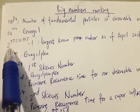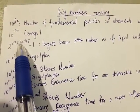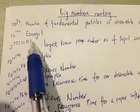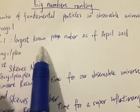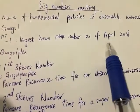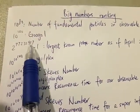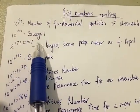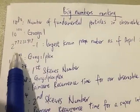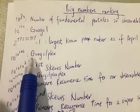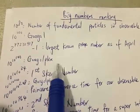Next we have 2 to the power of 77,232,917 minus 1, which is the largest known prime number as of April 2018. This number has around 22 million digits. Obviously it's bigger than the Googol, but smaller than the next one, which is a Googolplex — which has a Googol amount of zeros.